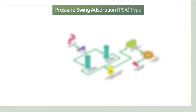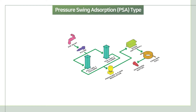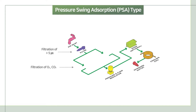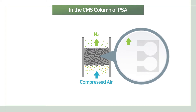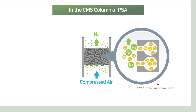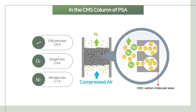Let's look at the PSA type first. It utilizes one pair of columns packed with carbon molecule sieve, known as CMS. The CMS column is packed with 3.0 angstrom pore-sized carbon molecule sieve to trap lower-sized compounds such as oxygen, while separating nitrogen, which is larger than 3.0 angstrom.